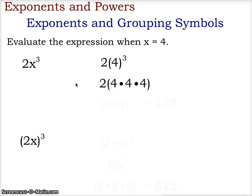We get 2, and 4 cubed is 4 times 4 times 4. So this gives us a value of 2 times 64, 4 times 4 being 16, 16 times 4 being 64. And that value is 128.